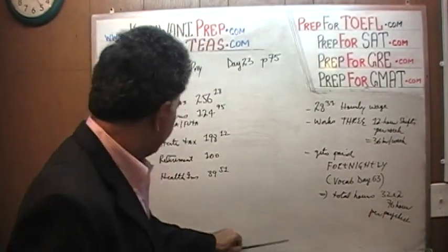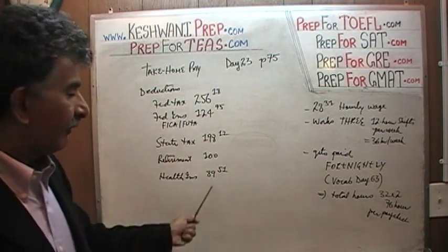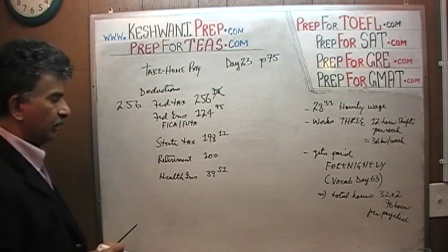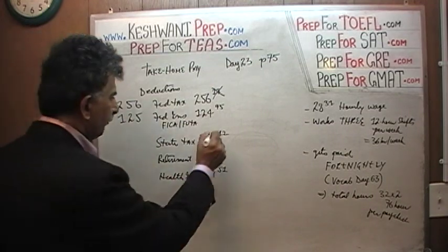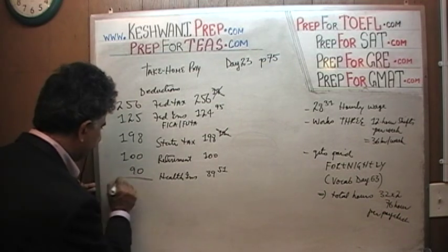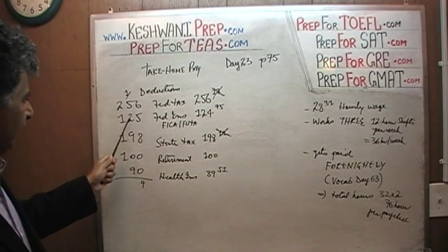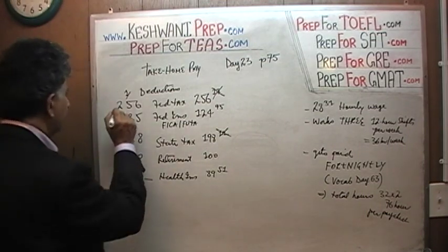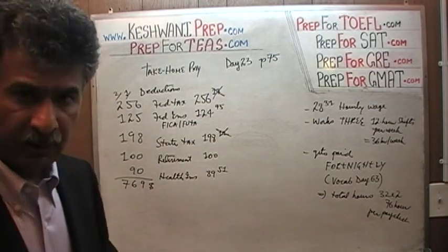Let's round things up. My digits always line up — units, tens, hundreds. We're going to do the rounding: $256.18 becomes $256; $125.95 becomes $125; state tax $198.12 becomes $198; retirement is exactly $100; and $89.51 becomes $90. Adding: 6 plus 5 is 11, plus 8 is 19, carry 1; 1 plus 5 is 6, 6 plus 2 is 8, 8 plus 18 is 26, carry 2; 2 plus 2 is 4, 4 plus 1 is 5, 5 plus 1 is 6, 6 plus 1 is 7. Total deductions: $769.